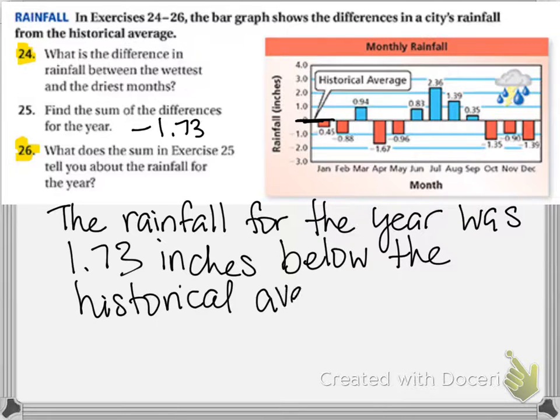All the negative numbers are below the historical average, so that's your answer for number 26.